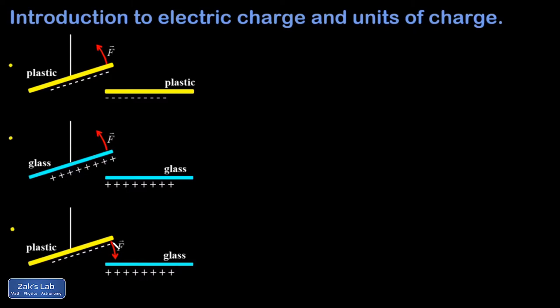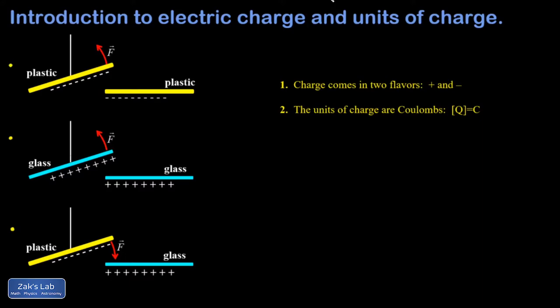The units of charge are called coulombs. To summarize: charge comes in two flavors called plus and minus, and the units of charge are coulombs. When I write brackets, it means 'the units of.' We typically use the letter q to represent charge, so the units of charge — written as brackets around q — are coulombs, capital C.